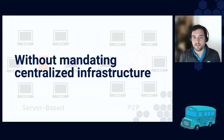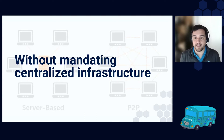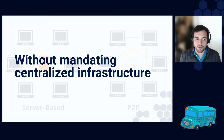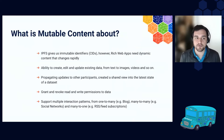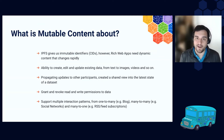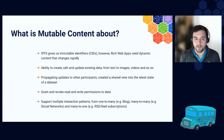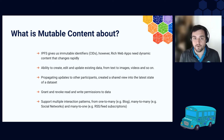We see centralized infrastructure as a way to augment the quality of the service, not something that should be mandated for the service to work. In order to meet this requirement, it's important to understand what mutable content is about. We are already very familiar with IPFS and how it gives us immutable identifiers — CIDs — to link to immutable content and verify its integrity. However, rich web apps do need dynamic data; content is always changing. We need to enable users and application builders to allow for creation of new data, edits, and updating existing data from text, images, and so on.